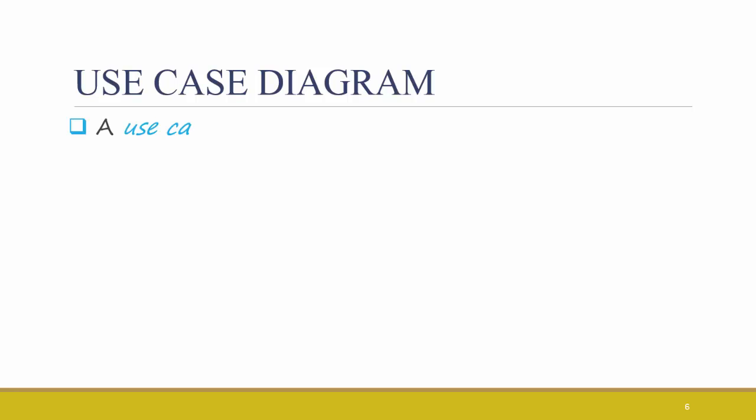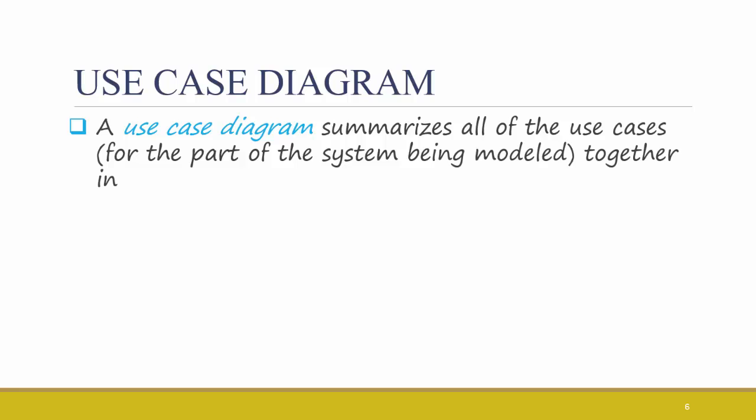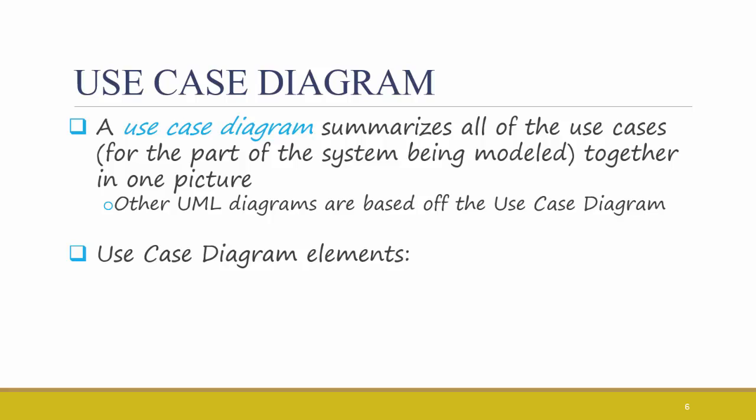The Use Case Diagram summarizes all of the use cases for the part of the system being modeled together in one picture. Other UML diagrams are based off of the Use Case Diagram. The Use Case Diagram gives context for the rest of the diagrams, similar to how the context-level dataflow diagram gives context for the lower-level dataflow diagrams. Same concept. Use Case Diagram elements include an actor, a name, a system boundary, and association relationships.